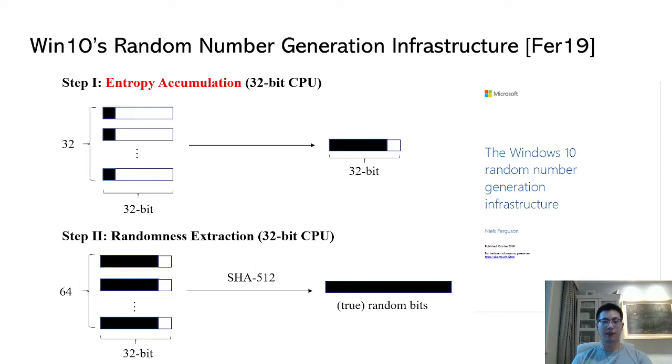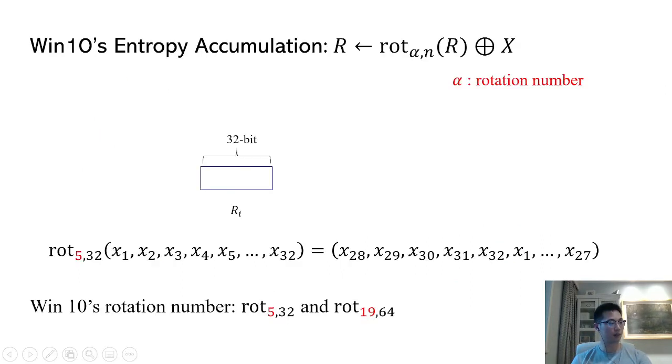To answer this question, it is helpful to see what is typically done in practice. Windows 10 implements the following rotate then XOR procedure. For example, in the 32-bit CPU, a register R of 32-bit length will be used to accumulate entropy. The entropy source X, such as an interrupt timing, is also a 32-bit stream.